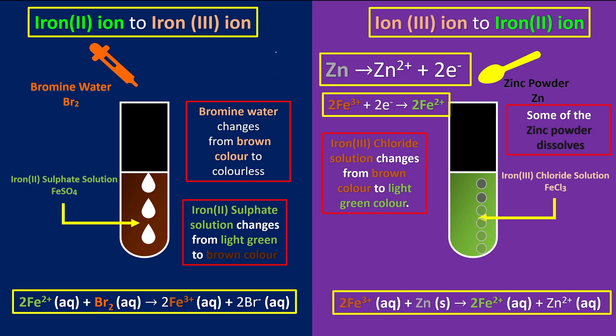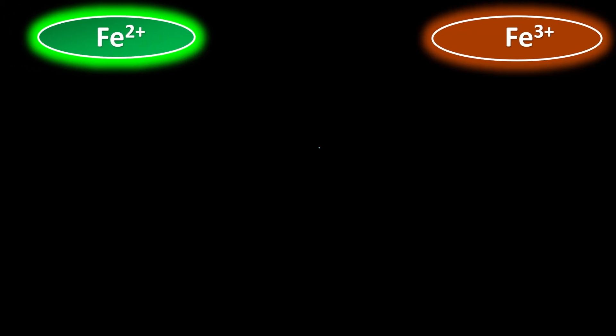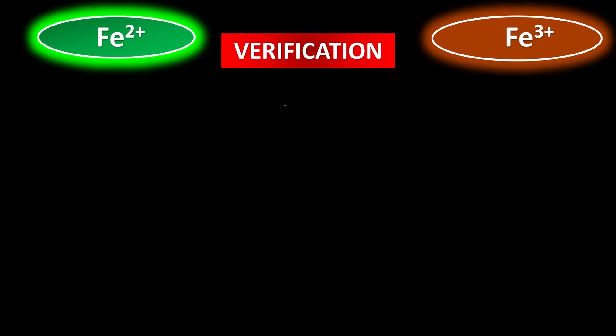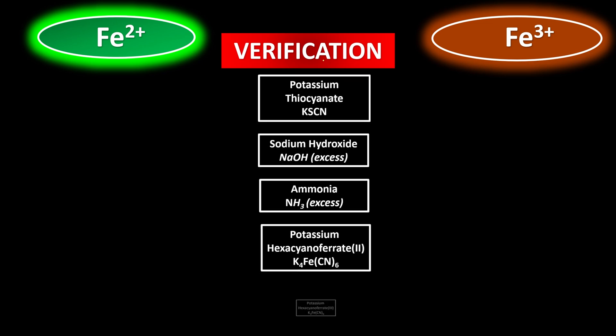But of course, this is not sufficient to prove that the iron(II) ions and iron(III) ions are eventually present in the solutions. So this is why we need to do further verifications. The solutions that we're going to use is going to be, please see again properly twice. So double P means twice. Those are potassium thiocyanate, sodium hydroxide, ammonia, potassium hexacyanoferrate(II).